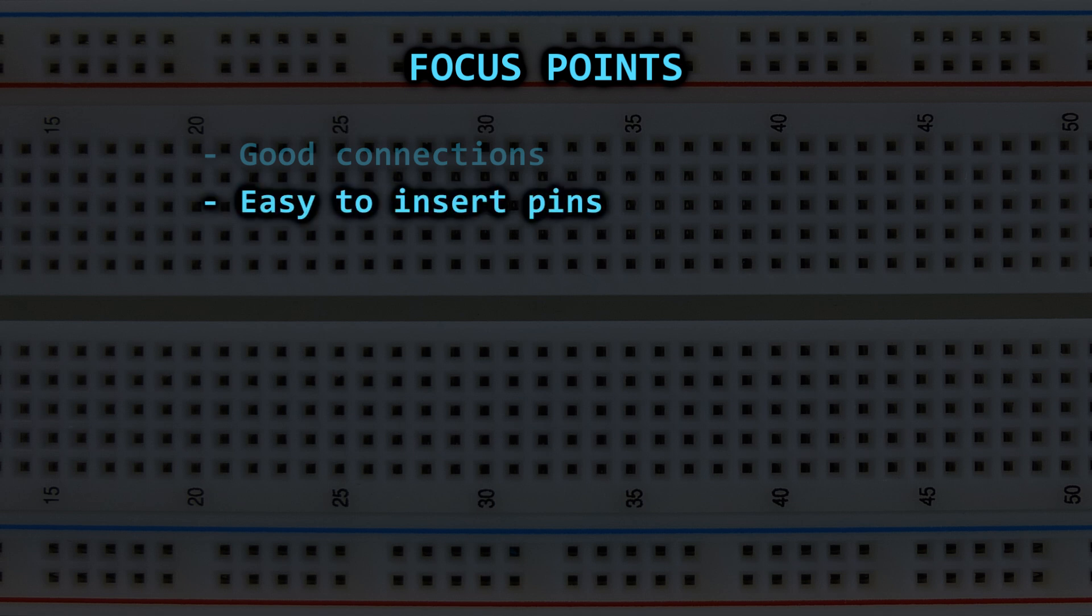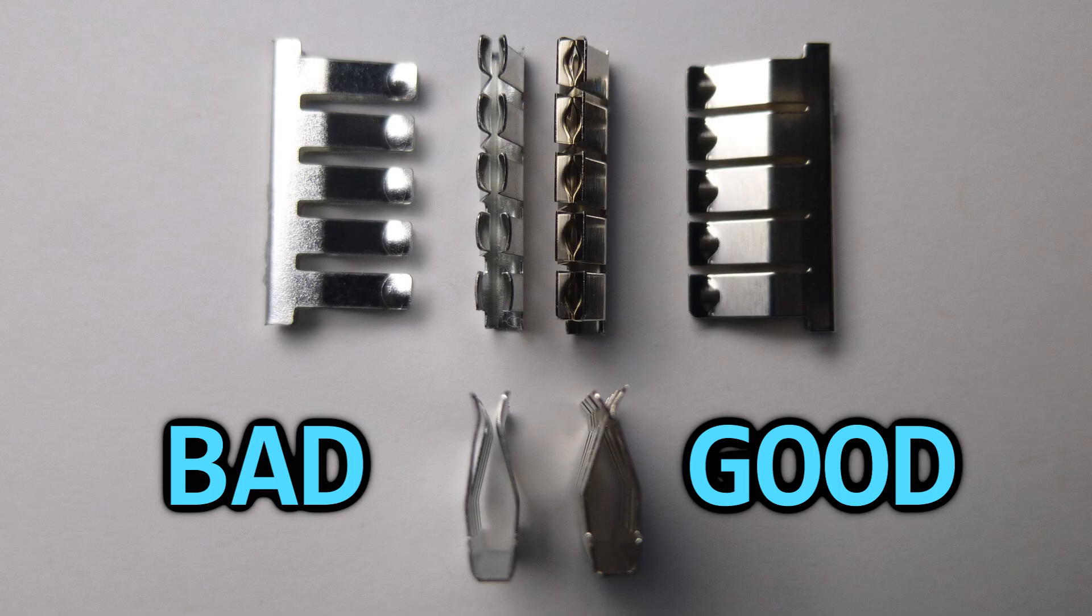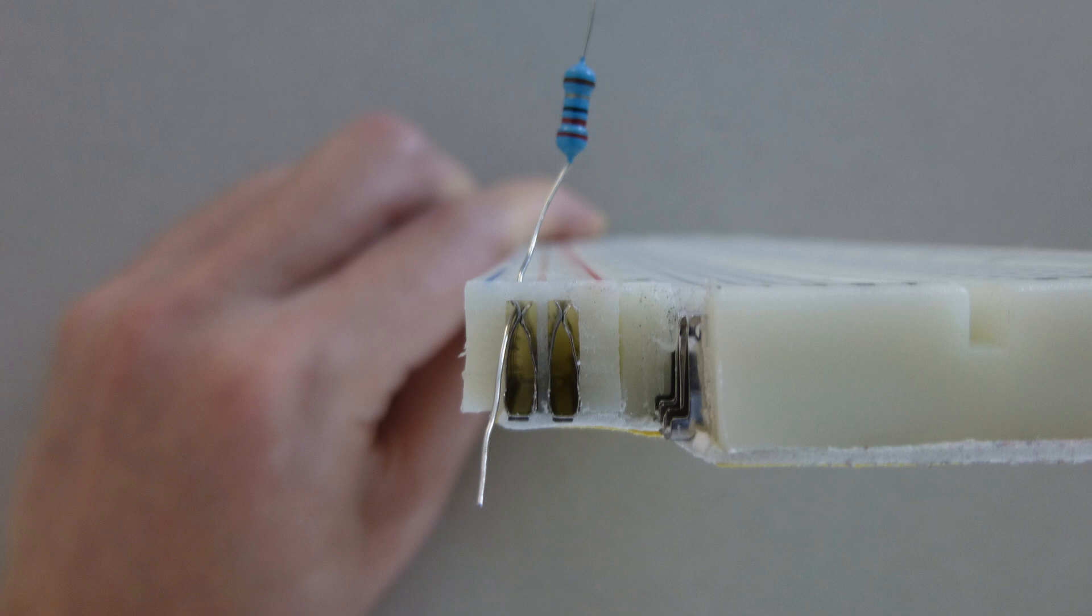Another thing is that it must be easy to install components. The cheapest breadboards have a narrow funnel and difficulty installing components, sometimes even missing the connector altogether.